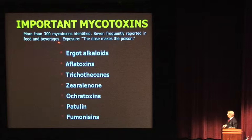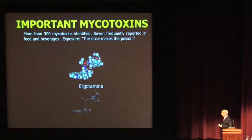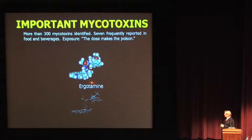These seven are the ergots, the aflatoxins, which we'll mention a little later, trichothecenes, zearalenone, ochratoxins, patulin, and fumonisins. These are energy-minimized, semi-empirical quantum mechanical structures of the compounds I'm going to tell you about. Ergotamine is one of the oldest known — it's a tetra-substituted indole derivative of lysergic acid.